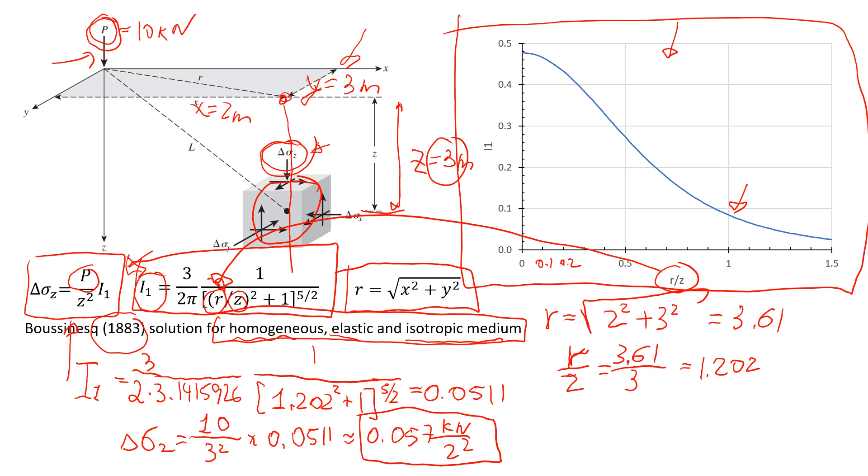So I came up with this curve. And instead of doing this calculation, so instead of calculating i, what I did here, you can still do that. I can just look at the graph. And if I know that r over z is 1.202...